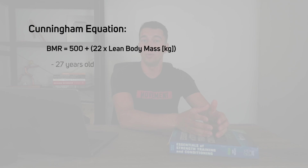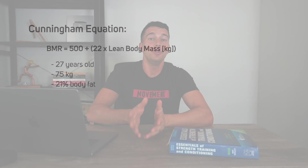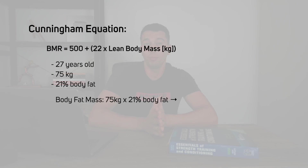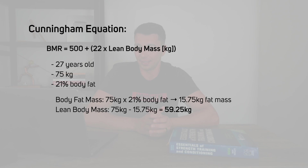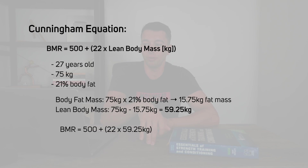Let's go through an example — you do want to memorize this one for the CSCS exam. Say we have a 27-year-old athlete with a body mass of 75 kilograms and 21% body fat. First, 75 × 0.21 = 15.75 kg of fat mass. Then 75 − 15.75 = 59.25 kg of lean body mass. Plugging into the Cunningham equation: 22 × 59.25 = 1,304, plus 500 gives us 1,804 calories as basal metabolic rate.